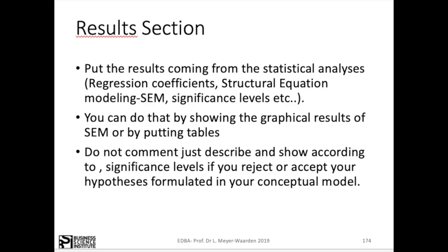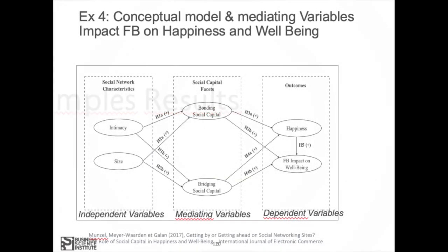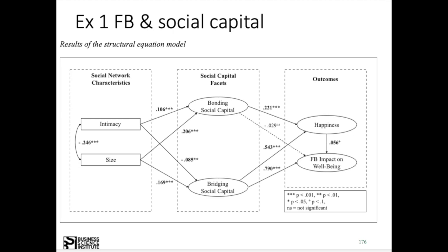We will see some examples to make it clearer. Here is example 1 about the impact of social capital on Facebook on happiness and well-being. In line with our hypothesis, the independent variable intimacy in the network impacts highly significantly at the 0.001 level bonding social capital, and also negatively at the 0.001 level bridging capital. This is in line with hypothesis 1 — we accept hypothesis 1.